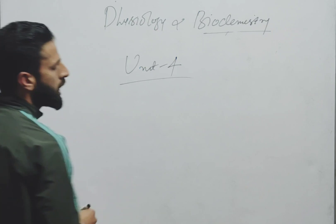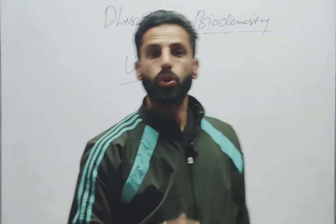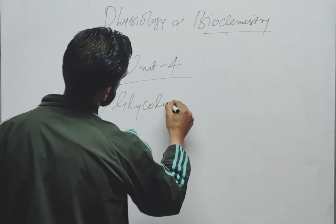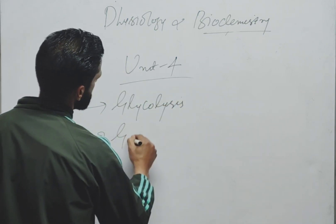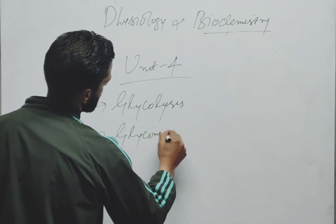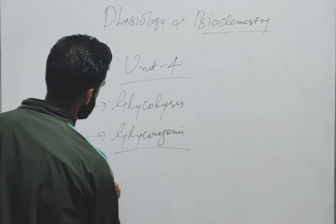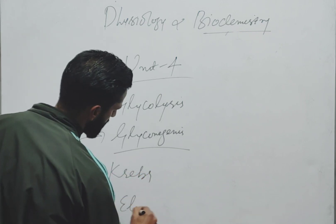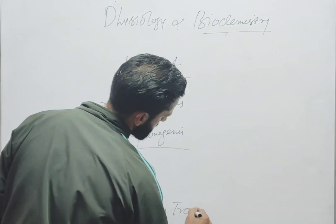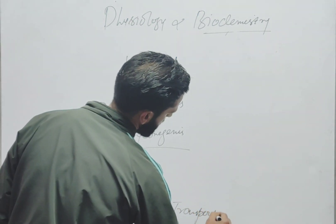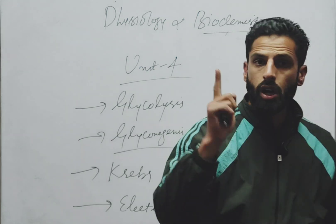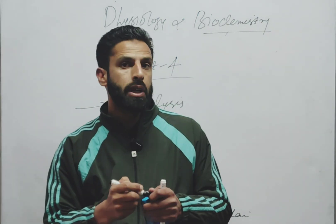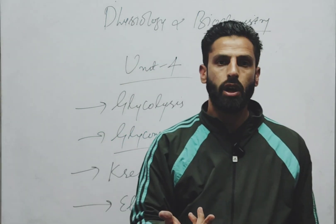In Unit 4, the important topics are glycolysis and gluconeogenesis. Then we have the Krebs cycle and the electron transport chain. Also important is beta oxidation of pyruvic acid — a 15-carbon compound — and how beta oxidation occurs, including enzymatic mechanism, inhibition, and regulation.